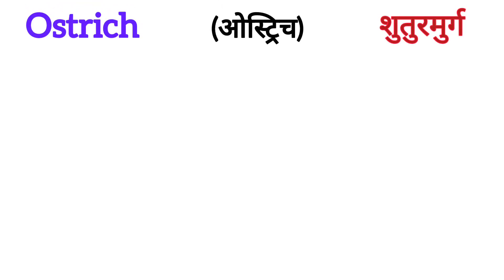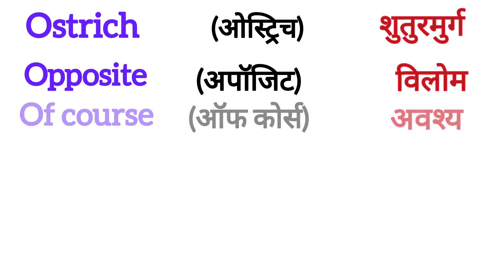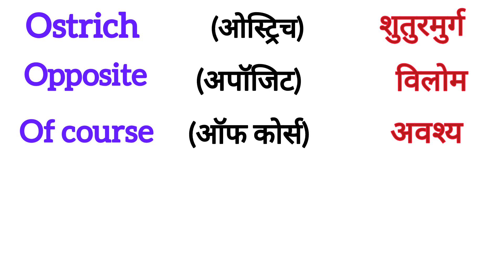Next word is OSTRICH. OSTRICH means SUTURMURG. Next word is OPPOSITE. OPPOSITE means BILOAM. Next word is OF COURSE. OF COURSE means AWAS.